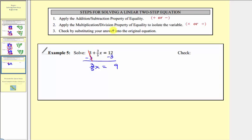Step two: multiply or divide to isolate the variable. Three-fifths x means 3/5 times x. Instead of dividing by a fraction, we multiply both sides by the reciprocal of 3/5, which is 5/3. On the left side, the product of reciprocals simplifies to one times x, which is x.